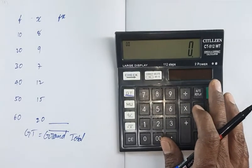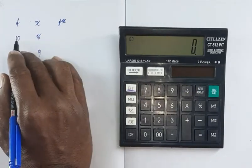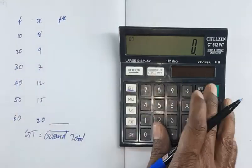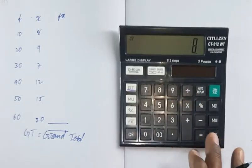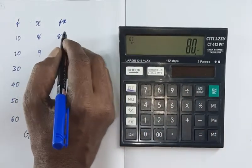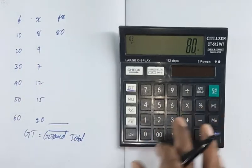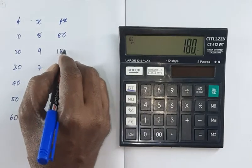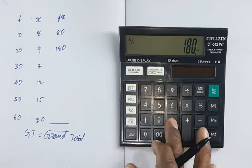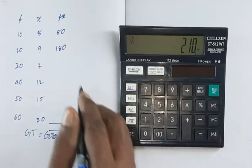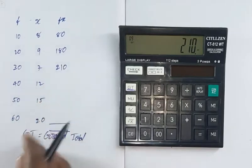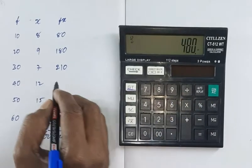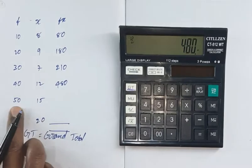So, first of all, f values and x values will multiply. So, 10 x 8 equal to 80. Next, 20 x 9 equal to 180. Next, 30 x 7 equal to 210. 40 x 12 equal to 480. Next, 50 x 15.